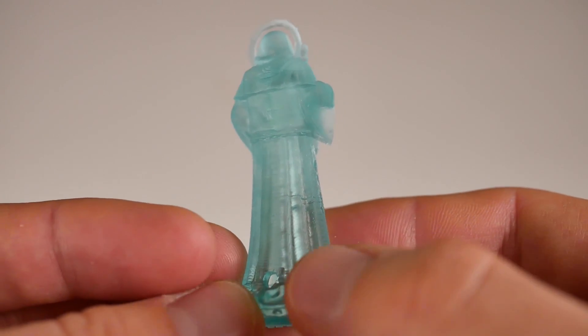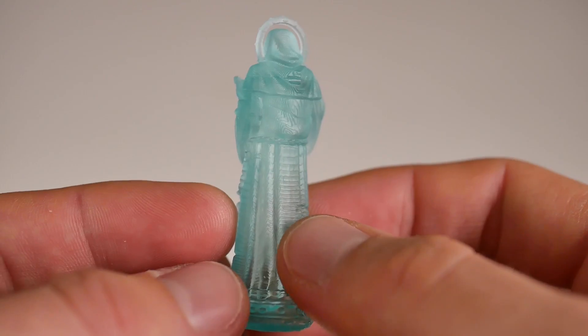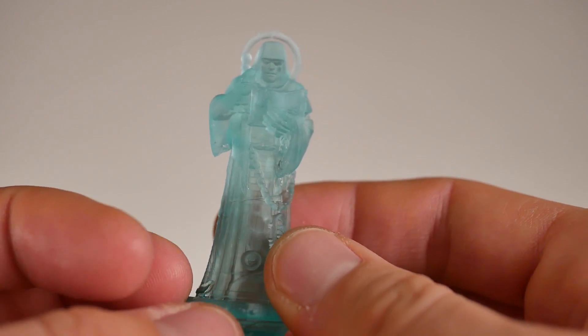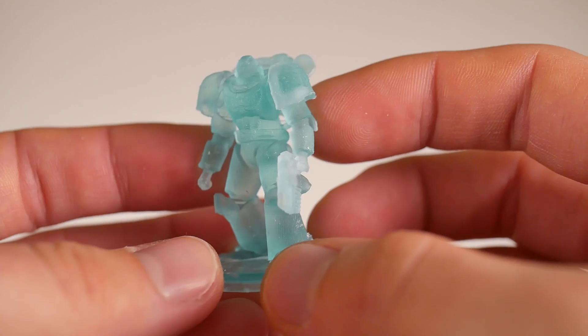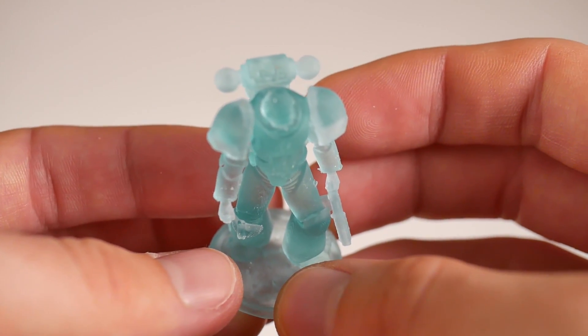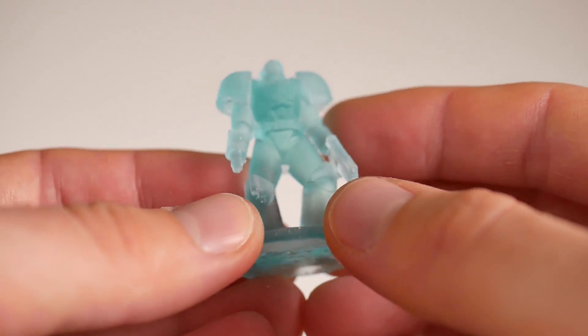I even think for things like minis these could be a better resin. With some of the minis that I've been printing out, I am not necessarily the easiest on them and I've had arms snap off and swords snap off and things like that. Well this has definitely more of a give and a bit more flex before it reaches the point of breaking.